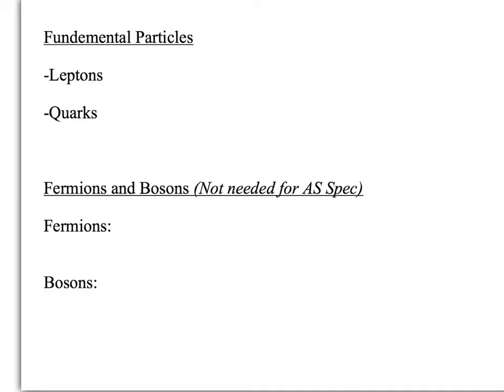Leptons and quarks are sometimes known as fermions. There's another category called bosons. This is actually as far as you need to know for the AES spec, but I'm going to go into a little more detail because it's interesting, and for those of you who want some ideas to go away and look at.